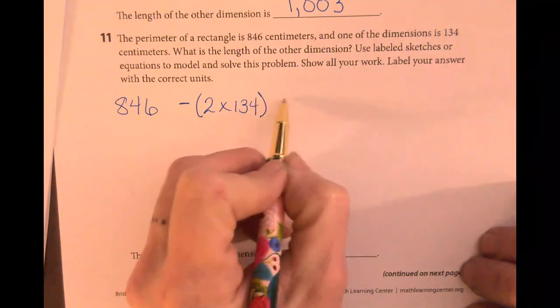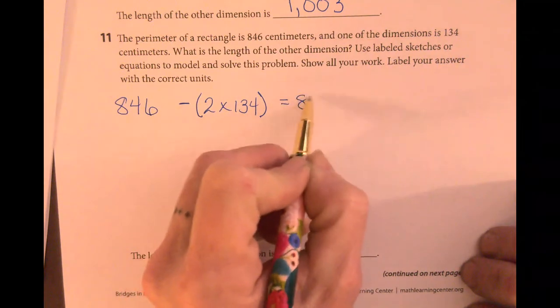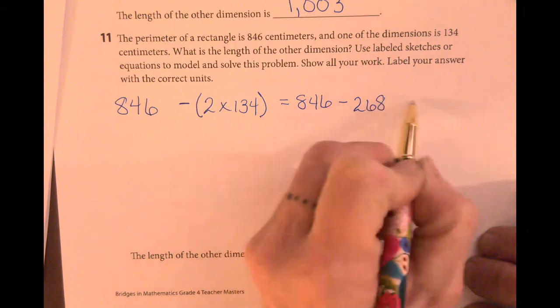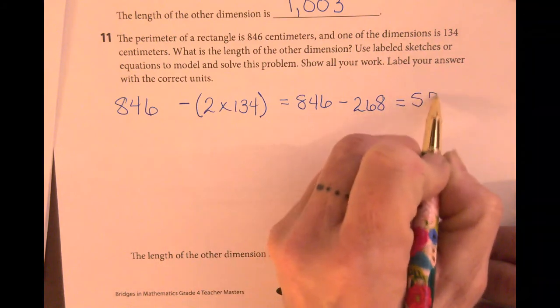That gives me 846 minus 268, which is 578.